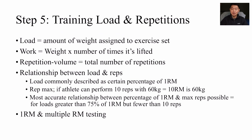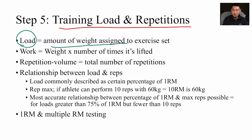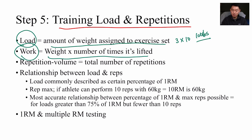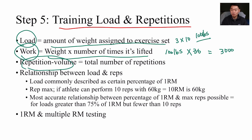Step five is training load and repetitions. Load is the amount of weight assigned to an exercise set — for example, 100 pounds for bench press. Work equals weight times number of times it's lifted: at 100 pounds for three sets of 10, that's 30 total reps, so your work is 3,000. Repetition volume is the total number of repetitions, which would be 30. Load is commonly described as a certain percentage of your one rep max — for instance, if an athlete can perform 10 reps with 60 kilograms, their 10-rep max is 60 kilograms.